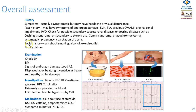In your overall assessment you must include elements from the history, examination, and investigations, and make an inquiry about medications that could be interfering with blood pressure readings. Usually hypertension is asymptomatic but occasionally patients have headaches or visual disturbance. Check about past history of vascular events, as this raises the risk profile and lowers the threshold at which you would introduce treatment. Check for a social history, particularly smoking, alcohol, exercise, and diet — especially sodium intake.